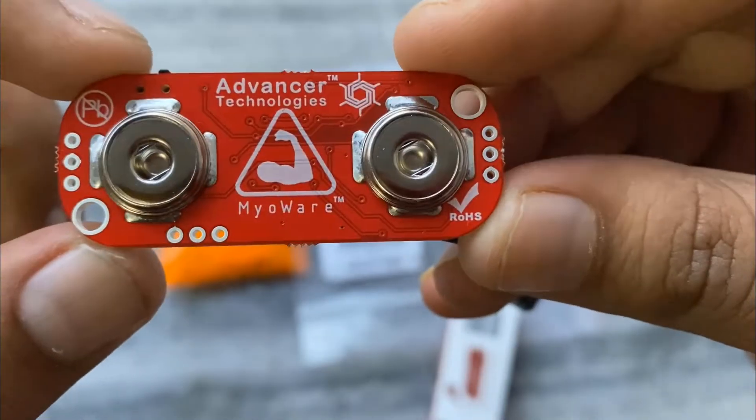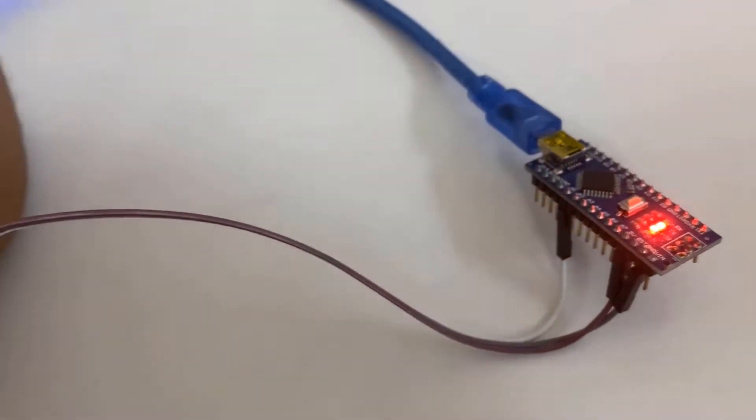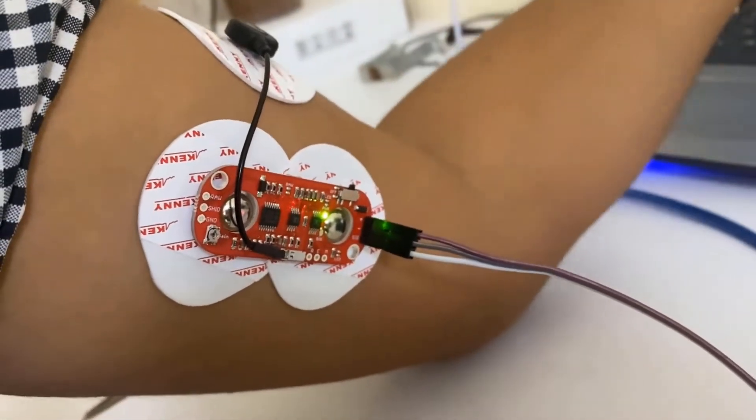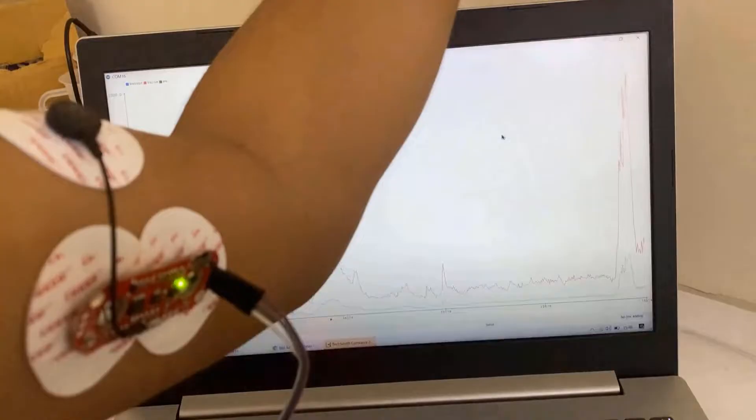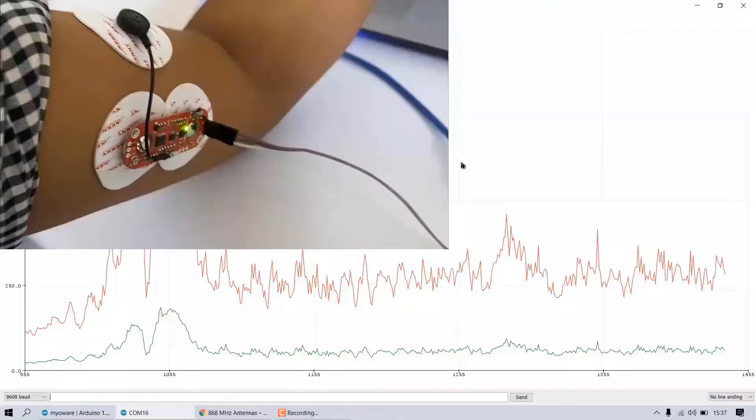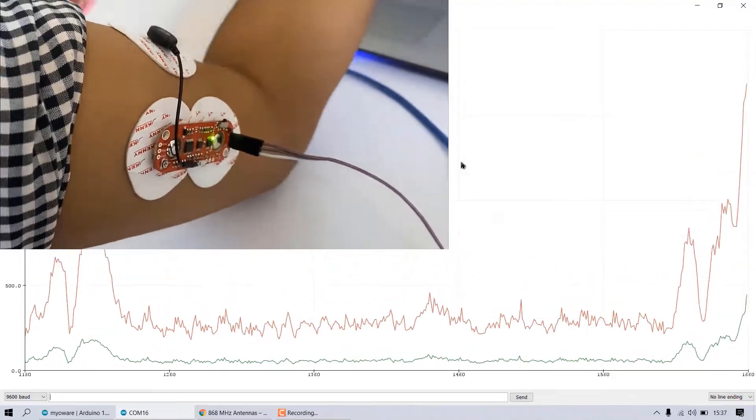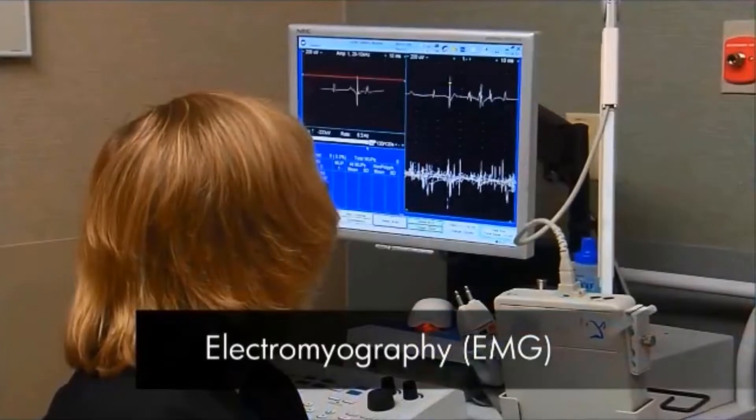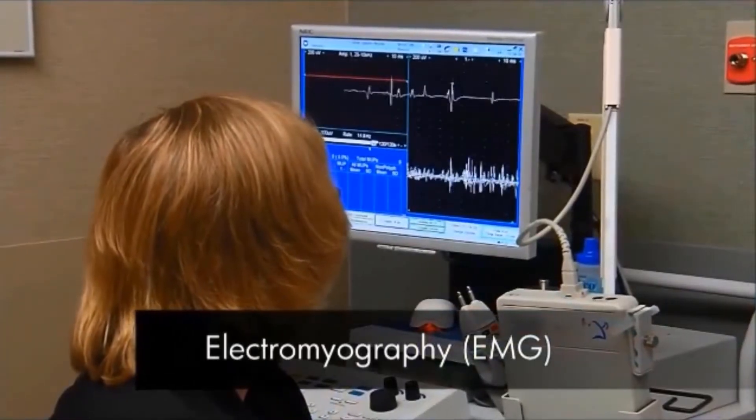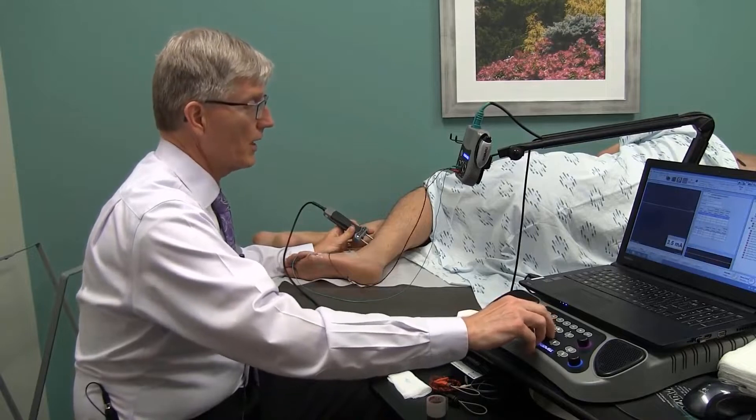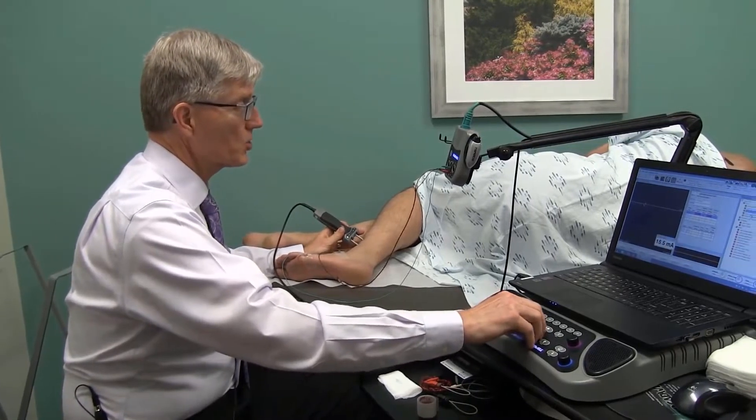We will interface the MyWare muscle sensor with Arduino and make our own electromyography device. Electromyography is an electrodiagnostic technique for evaluating and recording the electrical activity produced by skeletal muscles. EMG is performed using an instrument called an electromyograph to produce a record called an electromyogram. Most of the standard EMG measurement systems are expensive and not feasible for personal applications.